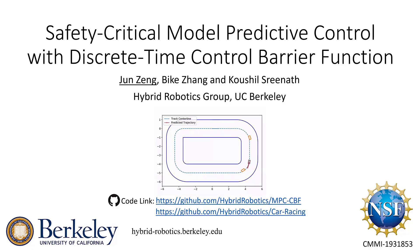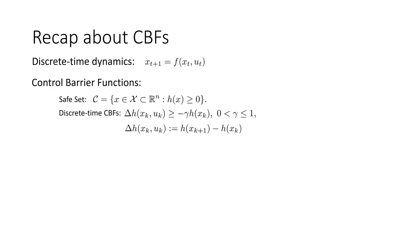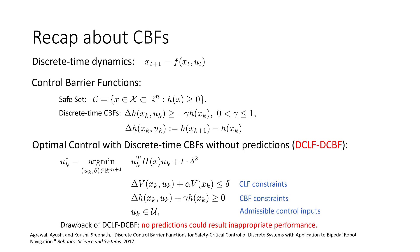Hello, I'm Jun, and I'm going to present our recent work on safety-critical model predictive control with discrete-time control barrier functions. Here is a quick recap. For a discrete-time system, the control barrier function is defined with an edge function h, and a corresponding safe set is defined. The discrete-time CBF constraint uses gamma between 0 and 1, which ensures h is always positive with set invariance along the trajectory. Previous work proposed an optimal control method called DCLF-DCBF with CLF constraint, CBF constraint, and input constraint, but the drawback is limited performance since there is no prediction in the optimization.